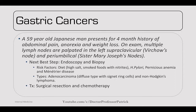Gastric cancers — a 59-year-old Japanese man has a four-month history of abdominal pain, anorexia, and weight loss. On exam multiple lymph nodes are palpated including the left supraclavicular (Virchow's node) and periumbilical (Sister Mary Joseph nodes). Next best step: endoscopy and biopsy. Risk factors: diet high in salt and smoked foods with nitrites (increased risk in Japanese men), H. pylori, pernicious anemia, and Menetrier's disease. Most common type is adenocarcinoma — diffuse type with signet ring cells. There's also non-Hodgkin's lymphoma of the stomach related to H. pylori. Treatment: surgical resection and chemotherapy.